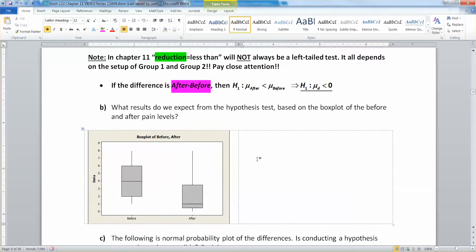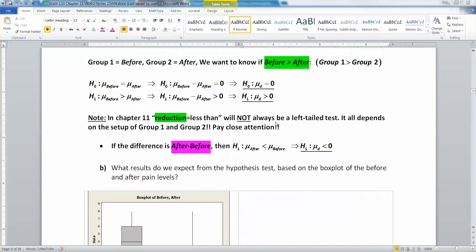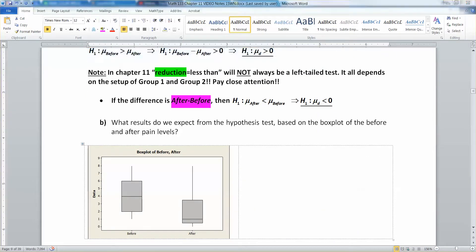What results do we expect from the hypothesis test based on the box plot of before and after pain levels? When we look at this, the before pain levels versus the after pain levels show quite a big difference. The before group is much more spread out and has the box much higher than the after group. The median of the after group is below Q1 for the before group. That seems to show there's some lowering of the pain level, at least for the bulk of people.